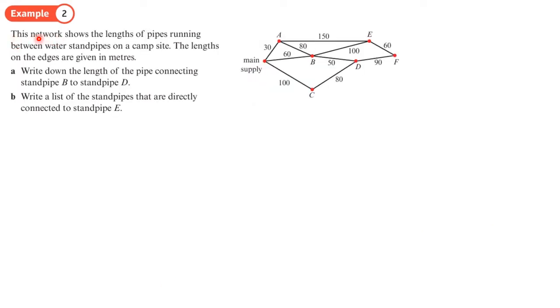So this network shows that all of the edges here are weighted, or it could be called a weighted graph. Network tells us there are numbers associated, and each one of those numbers represents the lengths of pipes running between water standpipes on a campsite. The lengths on the edges are given in meters. Part A, write down the length of the pipe connecting standpipe B to standpipe D. So that's nice and easy, it's just 50 meters, because we can go directly.